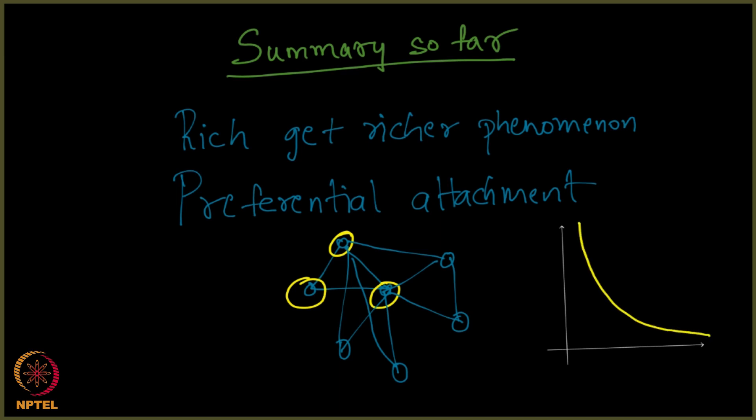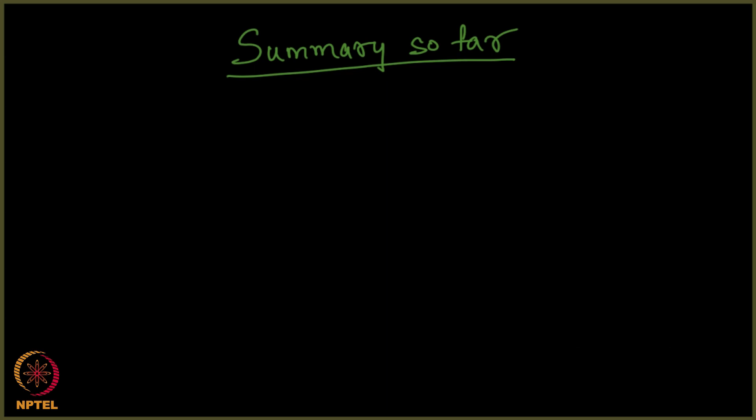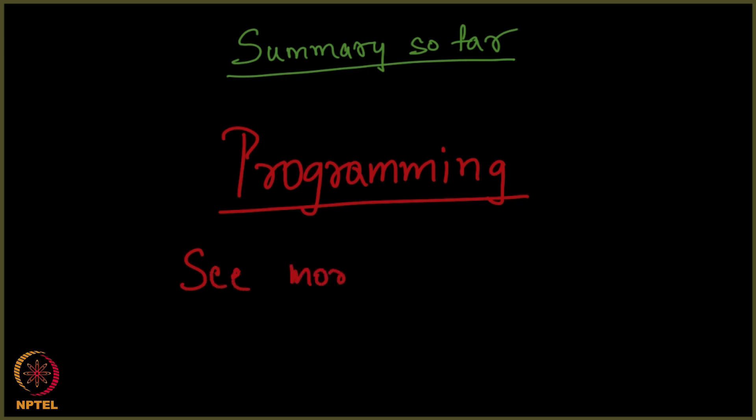This is a summary so far. Now what we will do is switch gears and try looking at some programming. We will try programming whatever we have learned so far and see if we are able to make the same observations that I have hypothesized. After programming, we will get back and see more of the rich getting richer phenomenon. So now let us switch to Python and see some really cool programming observations.